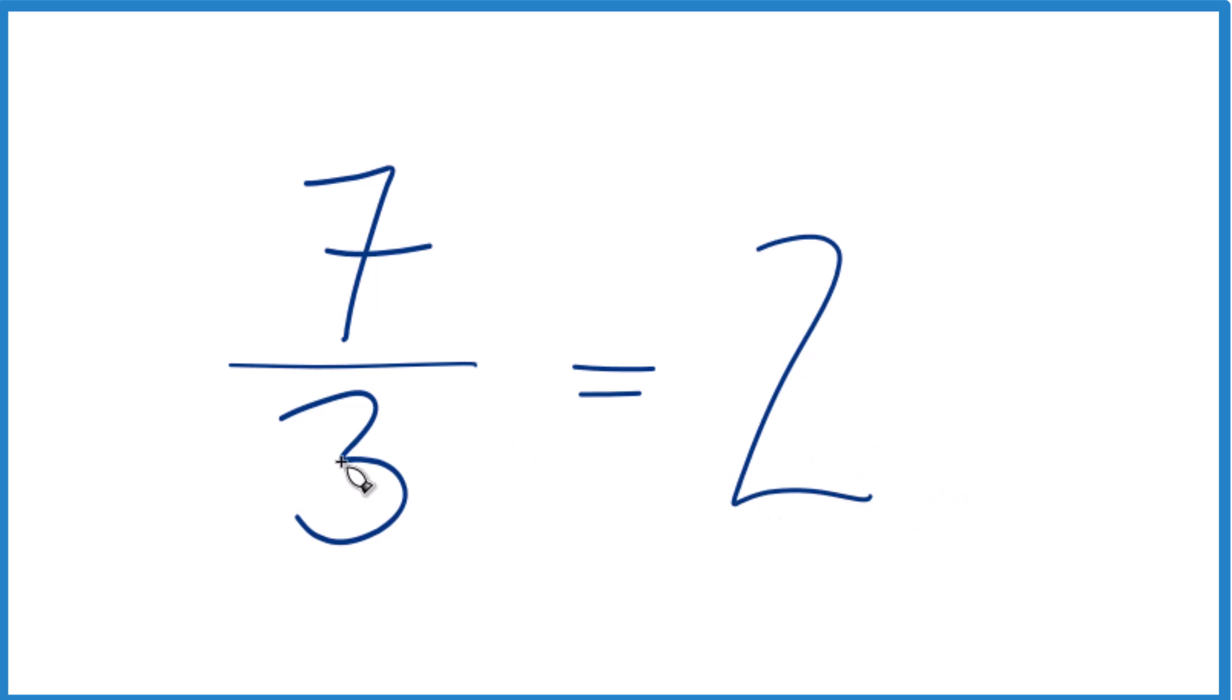So 2 will be our whole number. So 2 times 3 is 6 with a remainder of 1. And that remainder becomes the numerator. For the denominator, you just bring the 3 across.